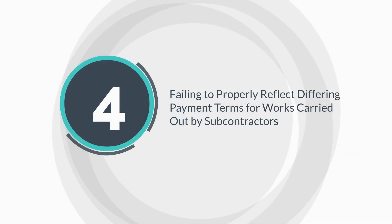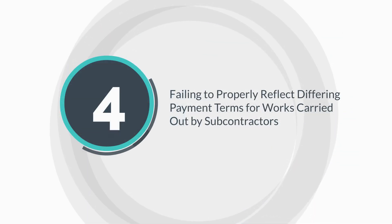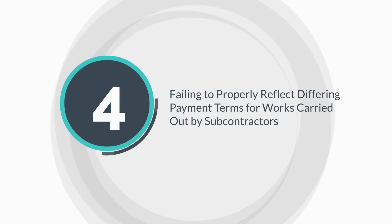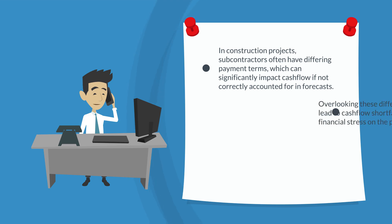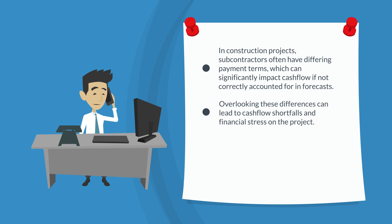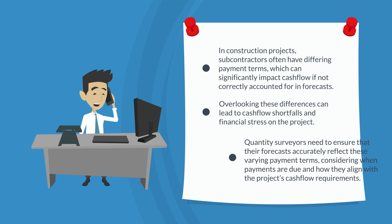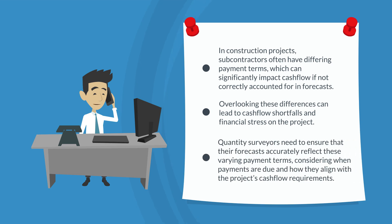Mistake four: failing to properly reflect differing payment terms for work carried out by subcontractors. In construction projects, subcontractors often have differing payment terms, which can significantly impact cash flow if not correctly accounted for in the forecast. Overlooking these differences can lead to cash flow shortfalls and financial stress on the project. Quantity surveyors need to ensure their forecasts accurately reflect these varying payment terms, considering when payments are due and how they align with the project's cash flow requirements.